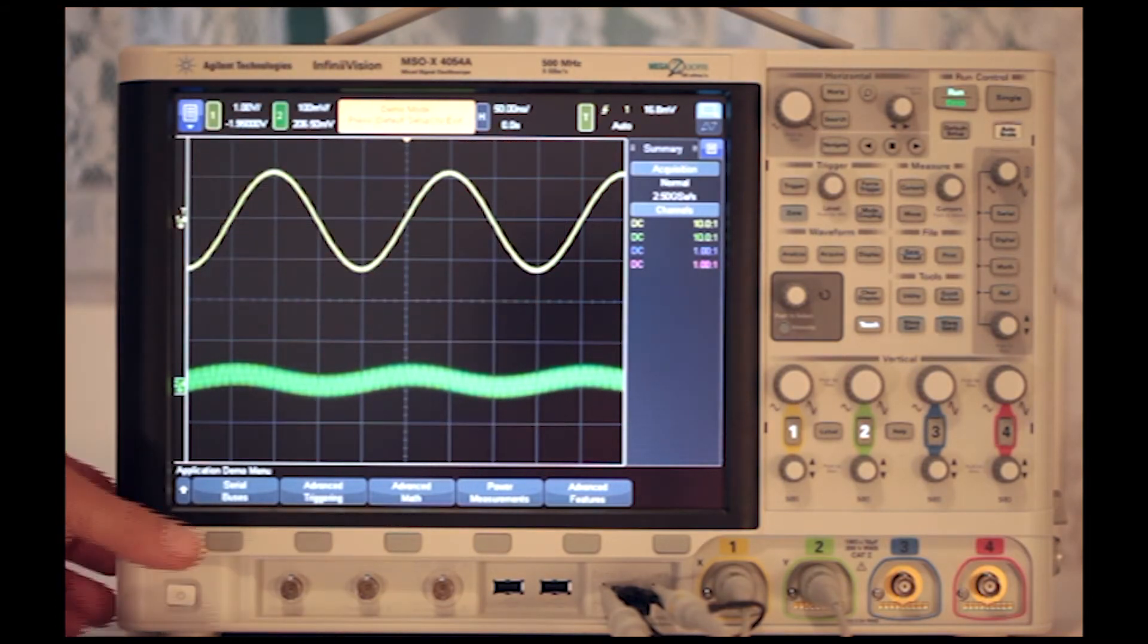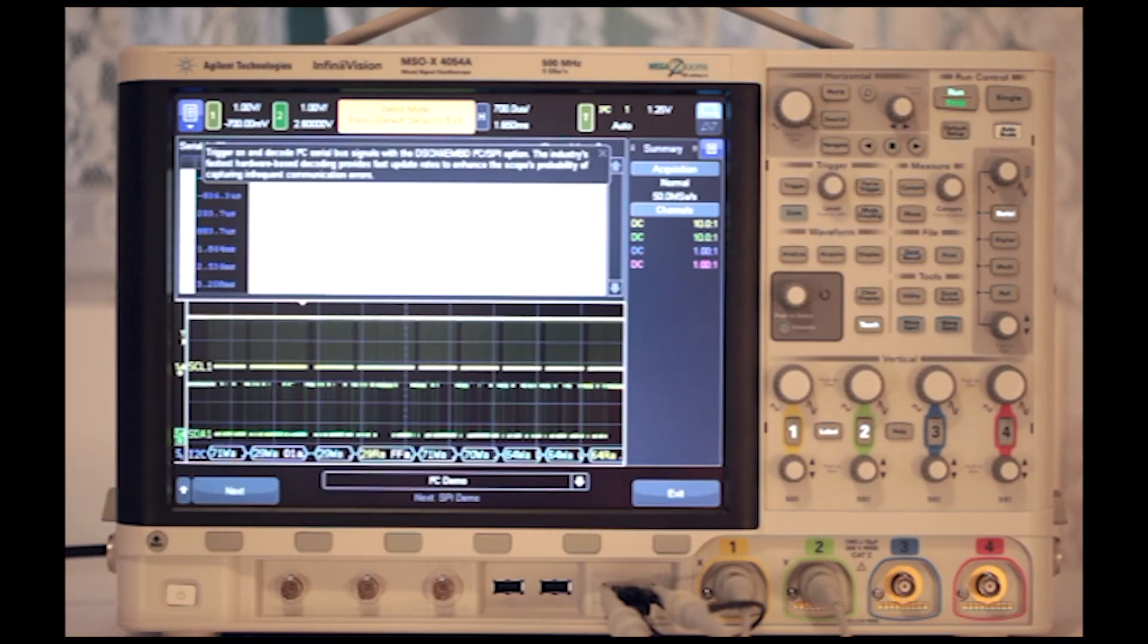Pushing Serial Bus, we land on the first demo, I2C Serial Bus Signals. This contains some really advanced technical material. The short description at the top tells which installed option is needed to trigger on and decode the signal. In this case, it is DSOX4EMBD, I2C, SPI option.